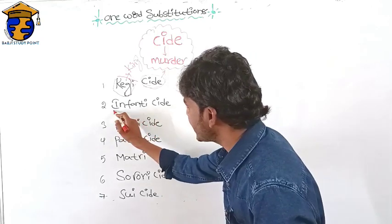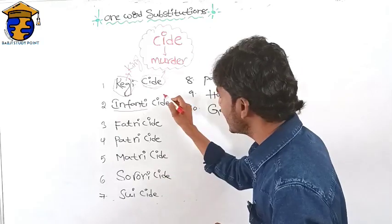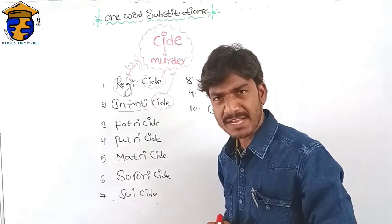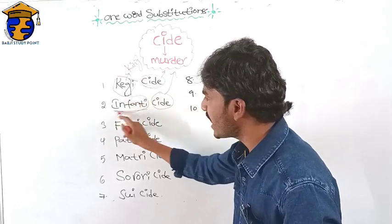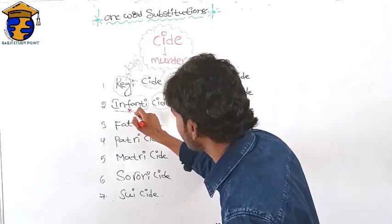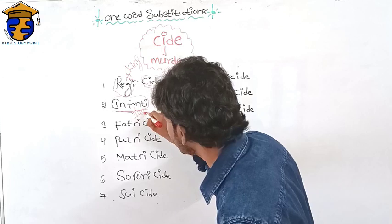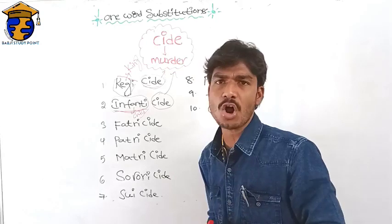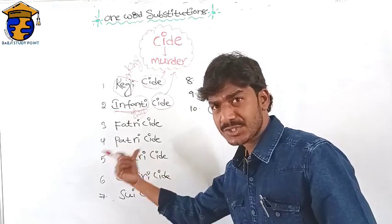Next one: infanticide. You know the suffix '-cide' means murder. What is the meaning of 'infanti'? 'Infanti' means child. What is the meaning of 'infant'? Infant means child. So the murder of a child is called infanticide.